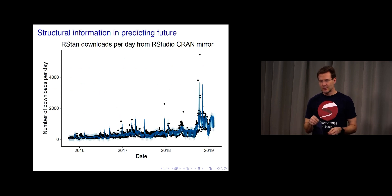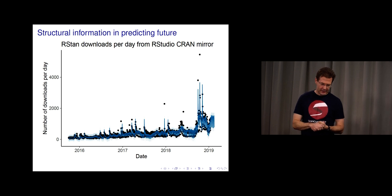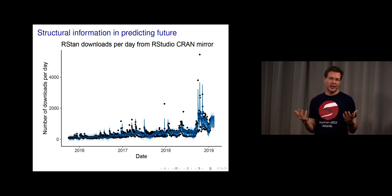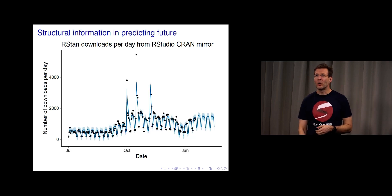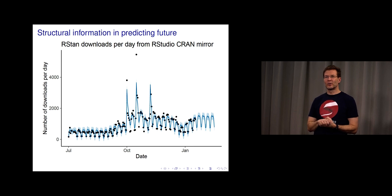This example of chips from the bag is quite simple. Here's a bit more complex example: time series prediction. This could be predicting a number of users coming to a website, customers coming to a store. In this case, it's RStan software downloads per day from RStudio CRAN mirror. You see the black dots are the raw data, the model fitted to the data shown by the blue line.